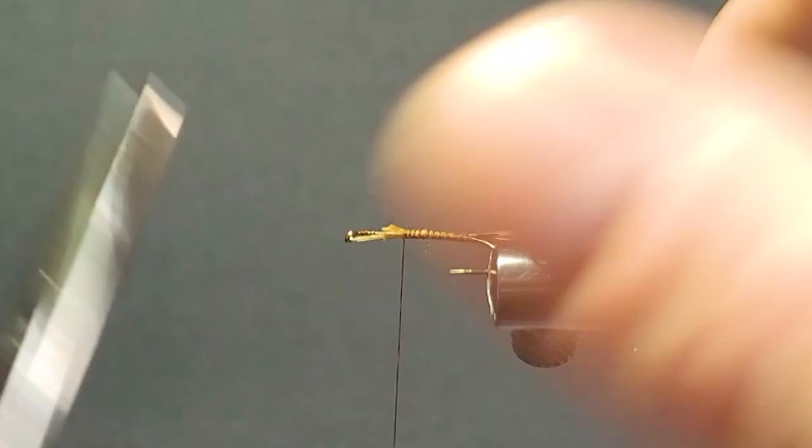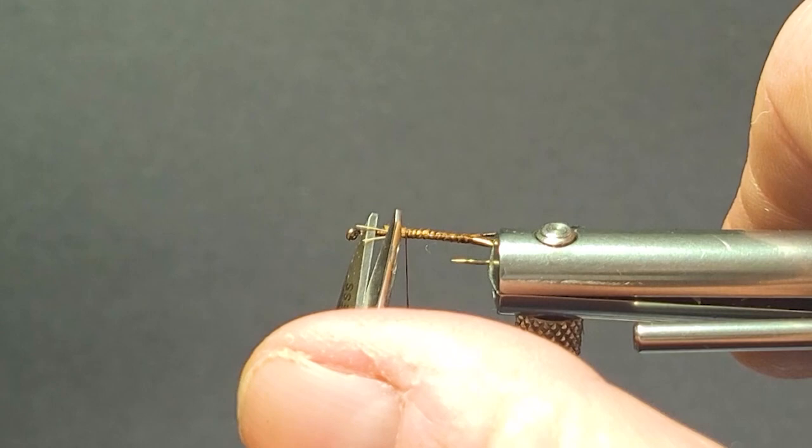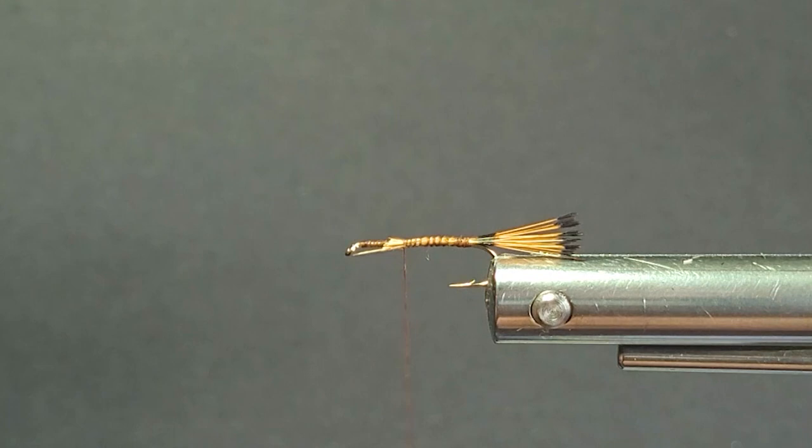Then we'll take in our little bit of our silver wire. This is extra small. You can use fine or extra fine as well. Tie that along the tie-in point.